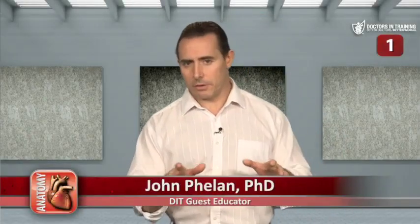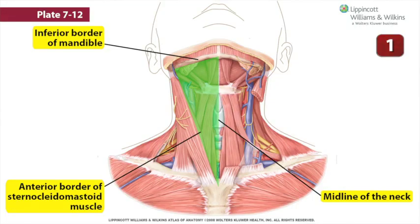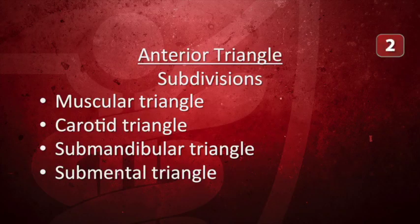The boundaries of the anterior triangle are the anterior border of the sternocleidomastoid, the inferior border of the mandible, and the midline of the neck. The anterior triangle is further subdivided into the muscular triangle, the carotid triangle, the submandibular triangle, and the submental triangle.